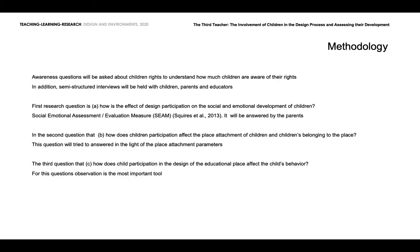The third question is: how does child participation in the design of educational spaces affect the child's behavior? For this question, observation is the most important tool, and there are observation and behavior record sheets prepared in advance to check behaviors. These sheets will change every 20 minutes according to the curriculum. After observation and signing the paper sheets, the researcher is going to draw behavioral maps, and through those maps, the study subjects will be examined in further detail.